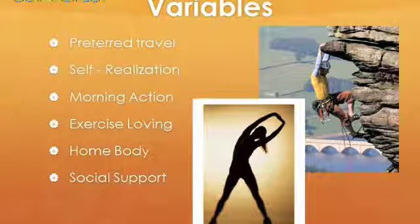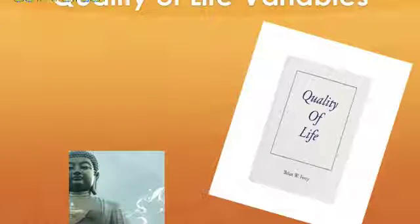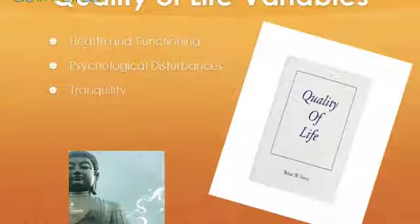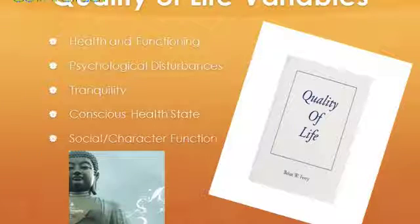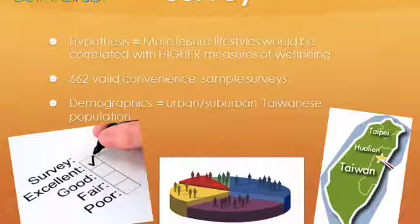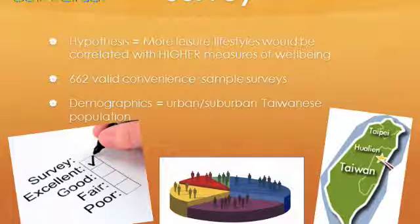For all these measures, a higher score indicated a greater activity level. Ferns (1996) developed a model to measure quality of life, which includes the following variables: health and functioning, psychological disturbances, tranquility, conscious health state, social character, and function. Based on past findings, it was hypothesized that more active leisure lifestyles would be correlated with higher measures of well-being.